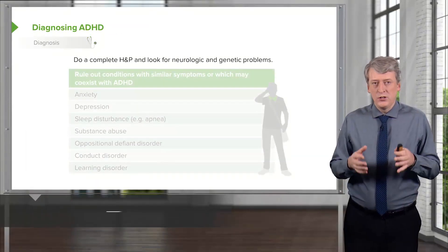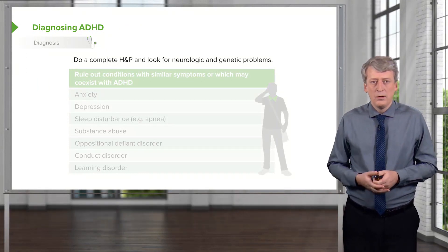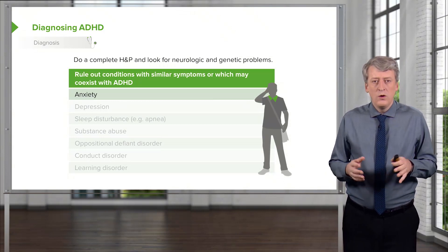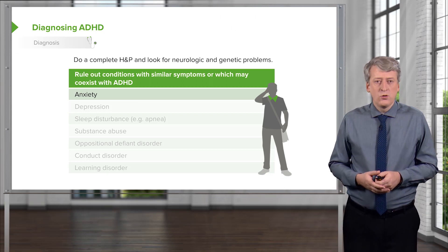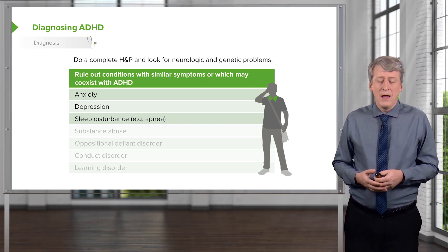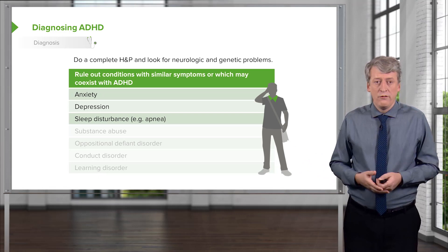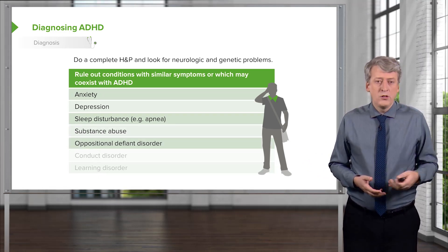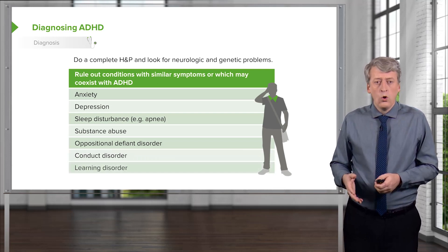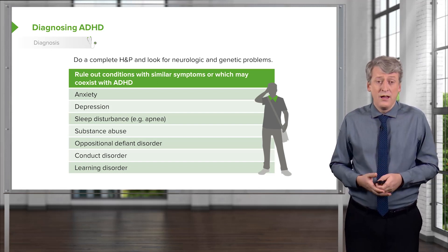When evaluating a patient with potential ADHD, it's important to do a complete history and physical and look for neurologic and genetic problems. It is also important to rule out conditions with similar symptoms that may coexist with ADHD, such as anxiety disorders, depression, and sleep disturbances. Sleep apnea, for example, can look very much like ADHD — treating the underlying cause resolves the symptoms. Other conditions to consider include substance abuse, oppositional defiant disorder, conduct disorders, and true learning disorders such as dyslexia.